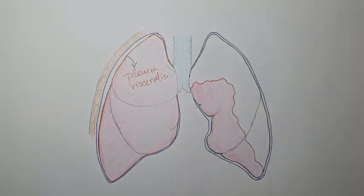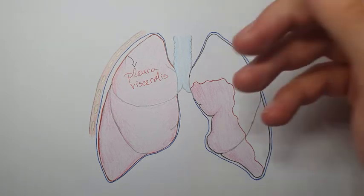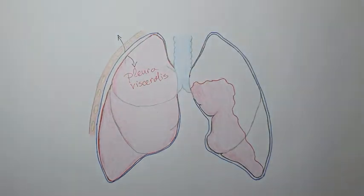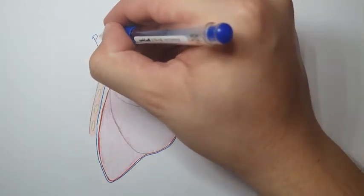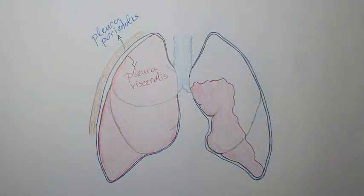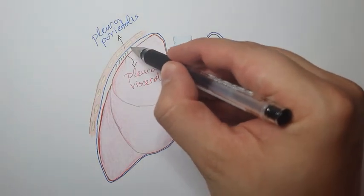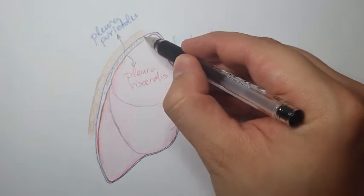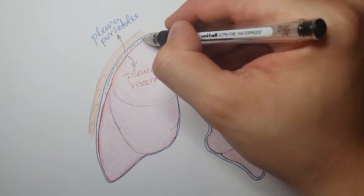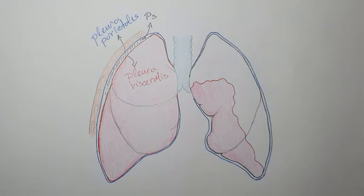On the inside of the rib cage there is also a lining — this is the parietal pleura, or pleura parietalis in Latin. Between these two linings is the pleural space. I've enlarged it here only for demonstration purposes — in reality it is very, very narrow.